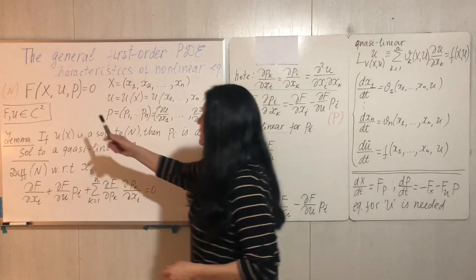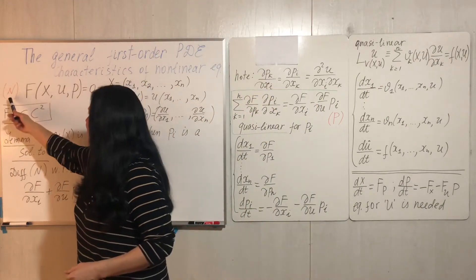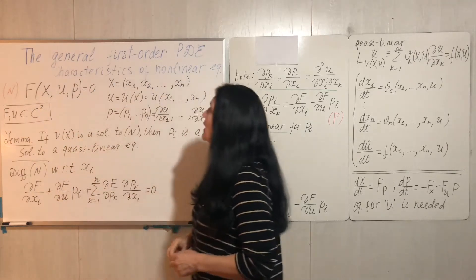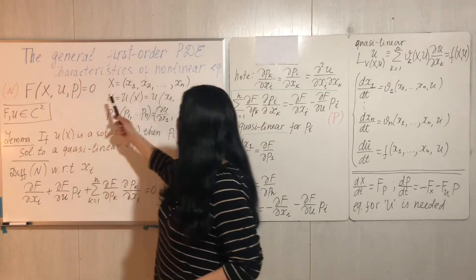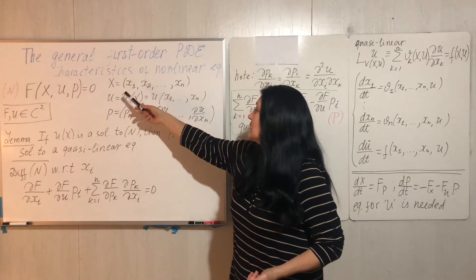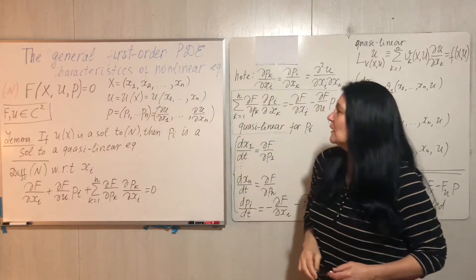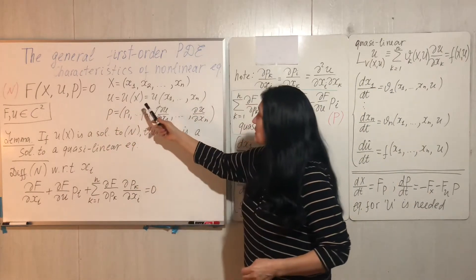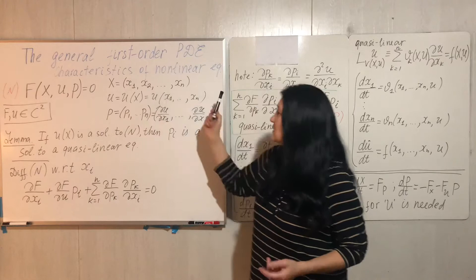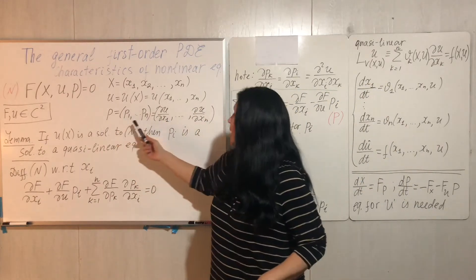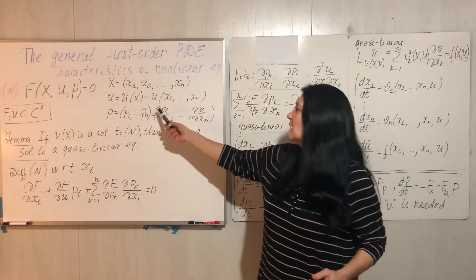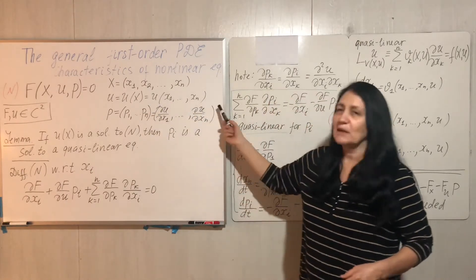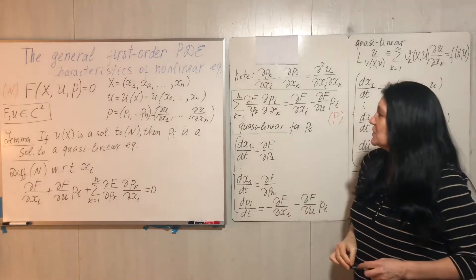Here is our equation — I gave it the name F. This equation depends on x, where x is a vector of independent variables, u is our unknown function (a function of x), and p is a vector of first partial derivatives of u with respect to each component of x.